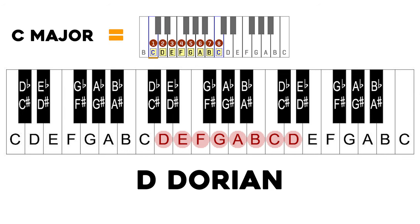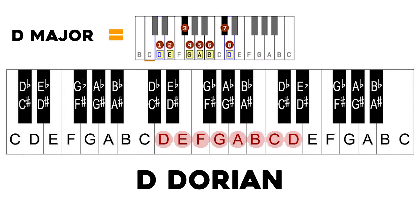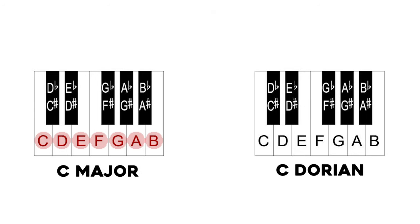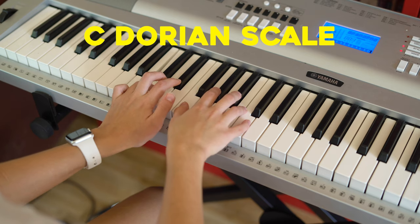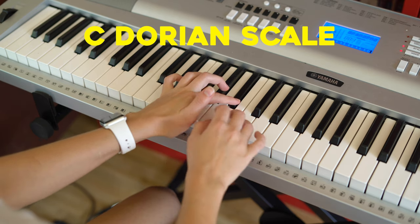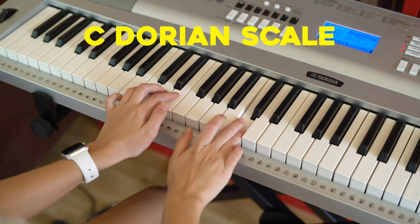To find C Dorian, you take the third and seventh notes of the C major scale — E and B — and lower them each by one semitone. This is the Happy Birthday song in C Dorian.